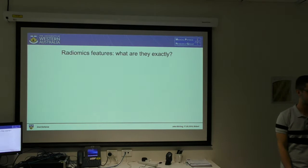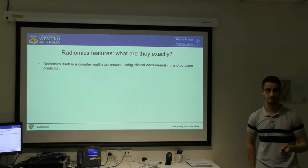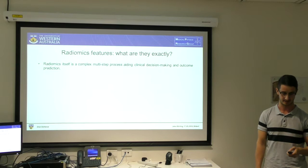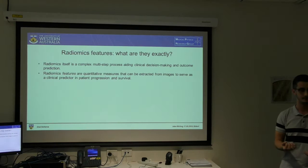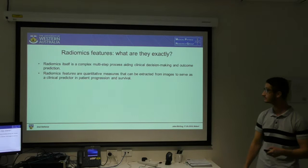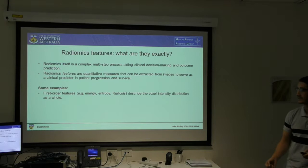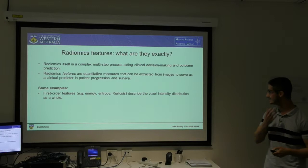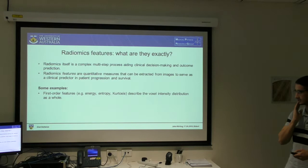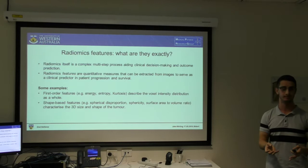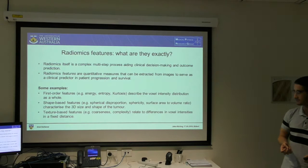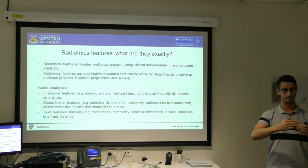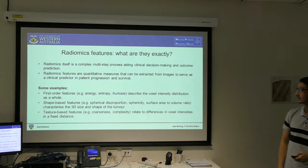Radiomic features — what actually are they? Radiomics itself is a complex multi-step process that aids in clinical decision making and outcome prediction. The features are quantitative measures used to associate the likely course of the patient's disease. There are different categories: first-order features are statistical measures describing voxel intensity as a whole, such as energy, entropy, and kurtosis. Shape-based features characterize the shape and size of the tumour. Texture-based features relate the rate of change of voxel intensity over a given distance. All these can be used to predict how the patient will progress.